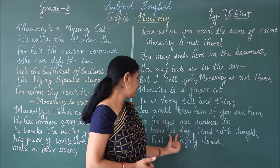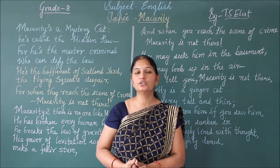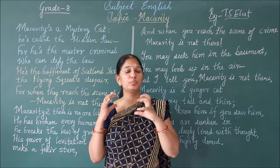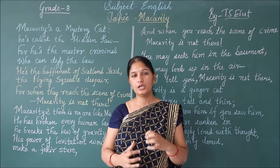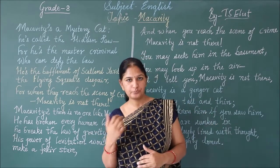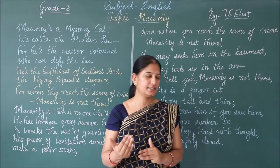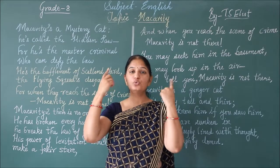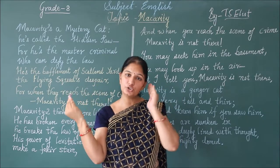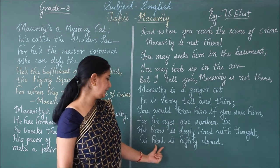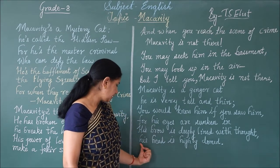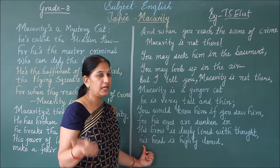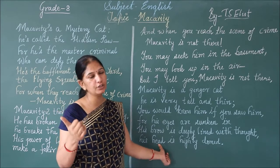His eyebrow is deeply lined with thought, meaning it appears as if he is preparing and planning for something — planning for some other crime. His head is highly domed — domed means in the shape of a dome, so his head is round and highly domed. In the line 'his head highly,' the letter H is repeated, so the figure of speech here is alliteration. He is the despair of the Flying Squad and the bafflement of Scotland Yard, because when they reach the place of crime, he cannot be found.